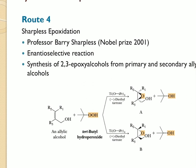Tartaric acid has two chiral centers and exists as three stereoisomers: two exist as a pair of enantiomers and the third as a meso compound. The form of tartaric acid used in Sharpless epoxidation is either pure (+)-diethyl tartrate or (-)-diethyl tartrate. Titanium tetra-isopropoxide and diethyl tartrate combine to make the active catalyst and are present in lesser amounts, generally between 5 to 10 mole percent.